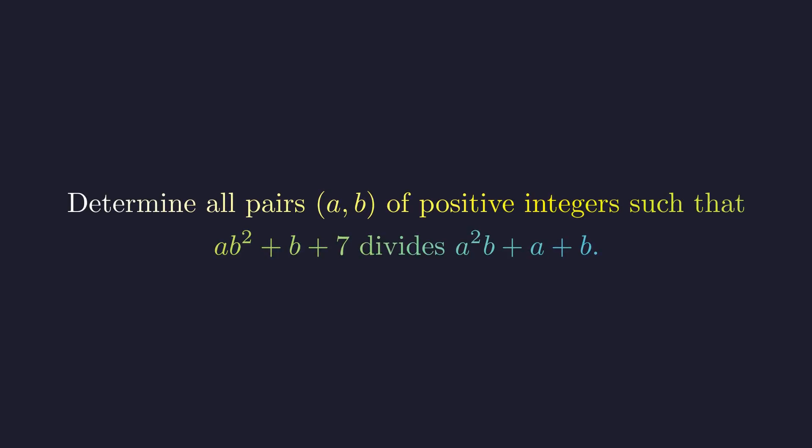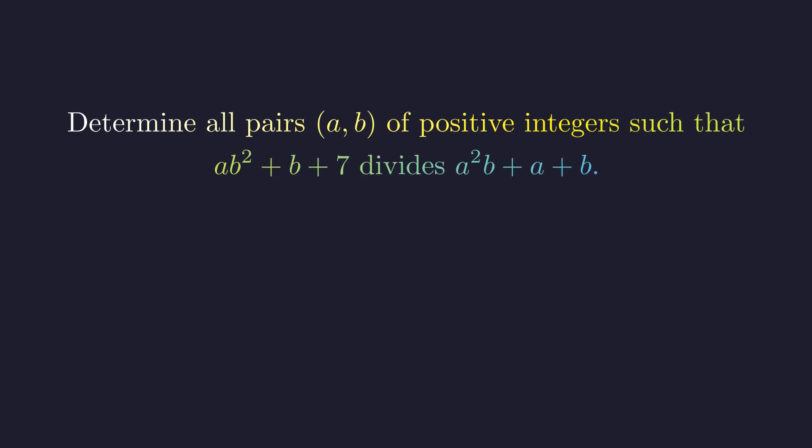The problem asks for all pairs of positive integers a and b, where the expression a times b squared plus b plus 7 divides a squared times b plus a plus b. This is the divisibility condition we need to solve.